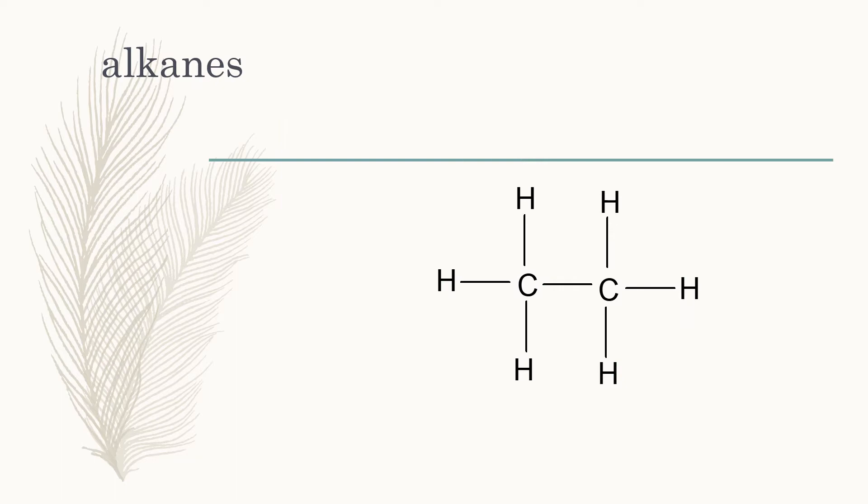One of the most common compounds we deal with is called alkanes. Alkanes are just carbon and hydrogen - they do not have anything else present, and they're all single bonds. We call this ethane because it has a chain of two carbons and nothing else present.